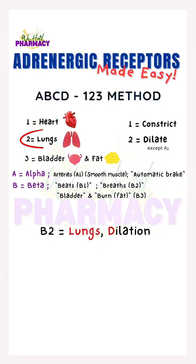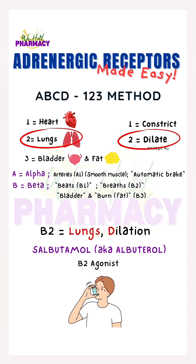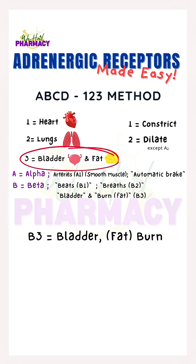In beta-2, we think 2 lungs. 2 also means dilation, as beta-2 causes bronchodilation. For example, during an asthma attack, salbutamol or albuterol, a beta-2 agonist, is used in inhalers to open up the airways.